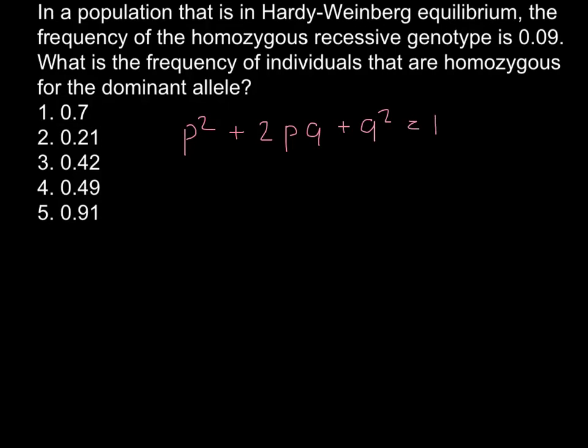P squared stands for the homozygous dominant, 2PQ stands for the heterozygous, and Q squared stands for the homozygous recessive.